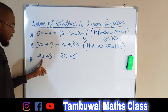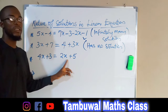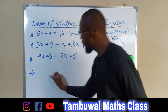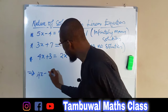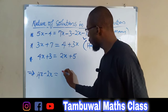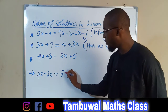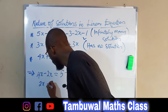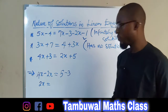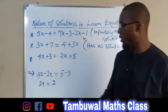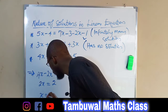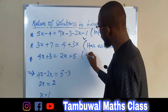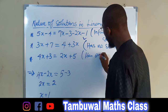Now let us look at the last one: 4x plus 3 equals 2x plus 5. If positive 2x crosses the equality sign it changes to negative, giving us 4x minus 2x on the left. Once 3 crosses the equality sign it changes to negative, so the right hand side is 5 minus 3. That gives 2x equals 2, and dividing both sides by 2 we obtain x equals 1. So this equation has exactly one solution.